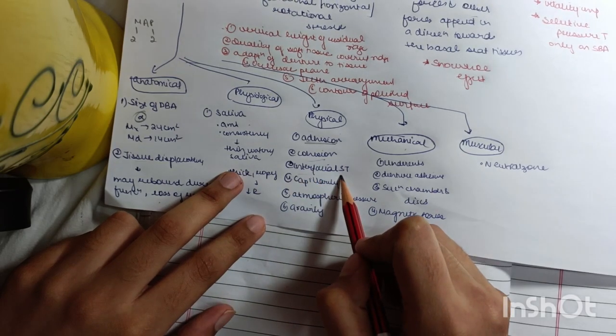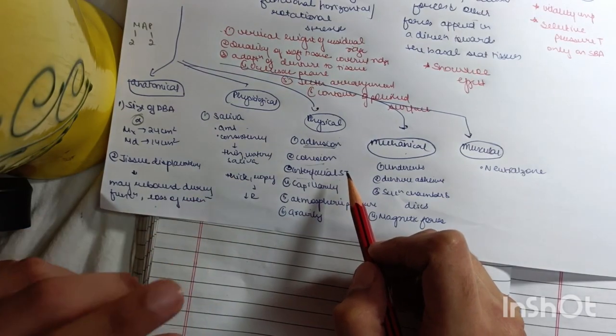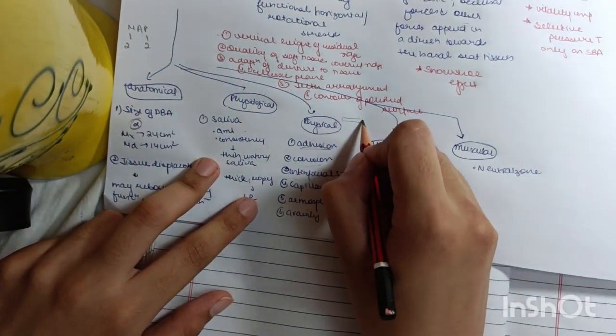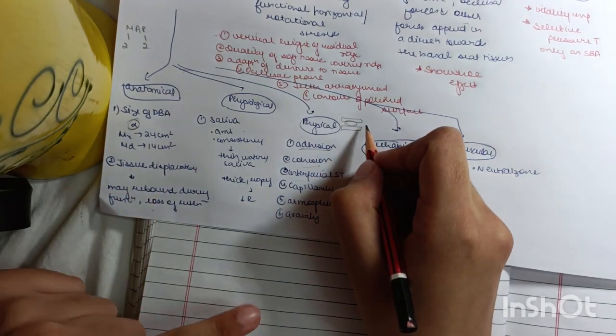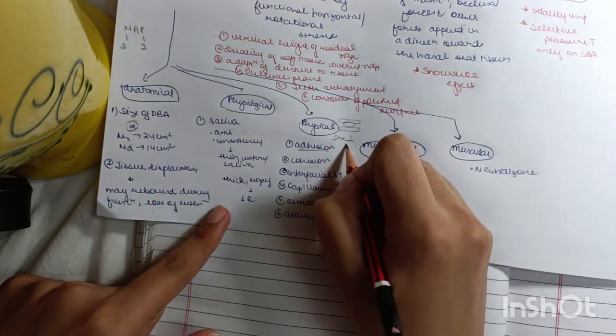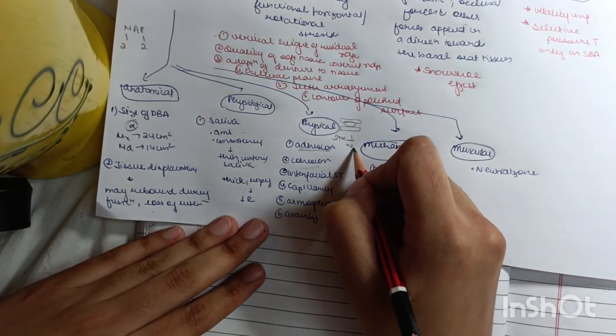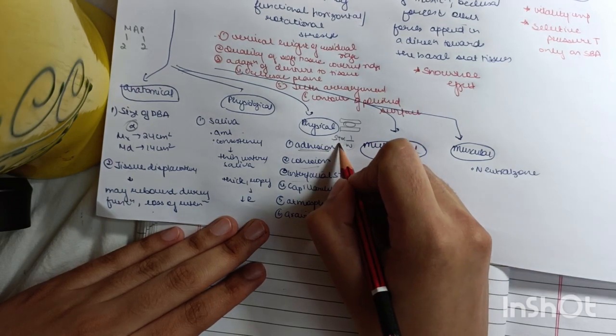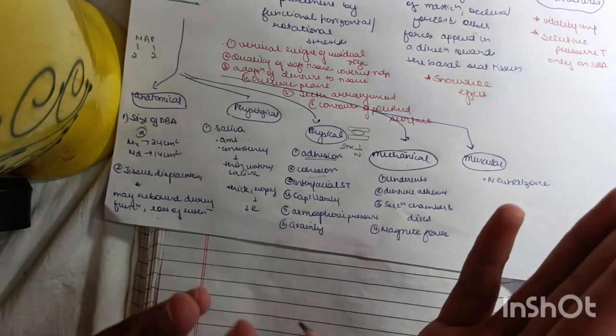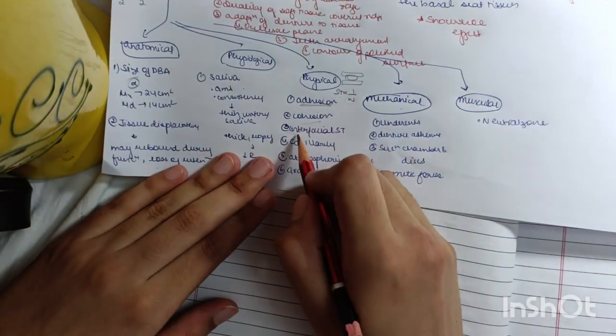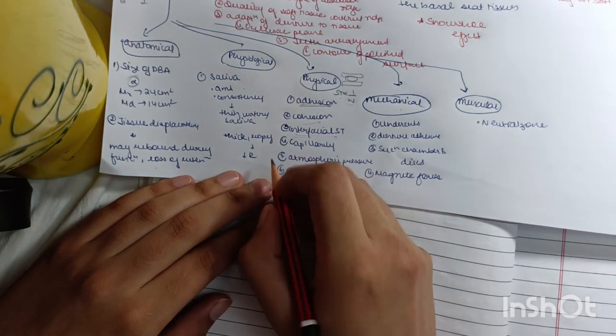Then interfacial surface tension. This is the force that is present between the liquid and the two interfaces. Surface tension is inversely proportional to the wettability. Now what we see is denture base material has high wettability, that is it has low surface tension. Saliva has higher surface tension, so basically saliva and denture base material are what we talk about in interfacial surface tension.